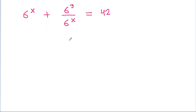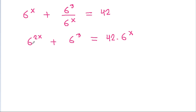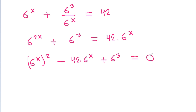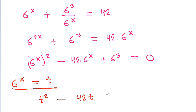If we multiply both sides by 6 power x, we get 6 power 2x plus 6 cubed equals 42 times 6 power x. Rearranging, 6 power x squared minus 42 times 6 power x plus 6 cubed equals 0. Taking 6 power x equal to t, we get t squared minus 42t plus 6 cubed equals 0.